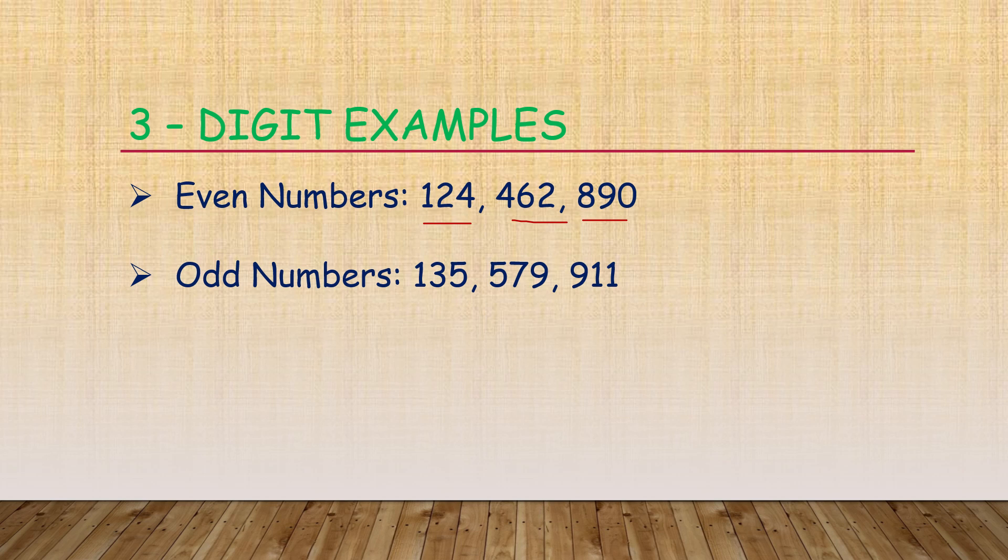How to check? Here the last digit is 4, here the last digit is 2, and here the last digit is 0. These all are even numbers.